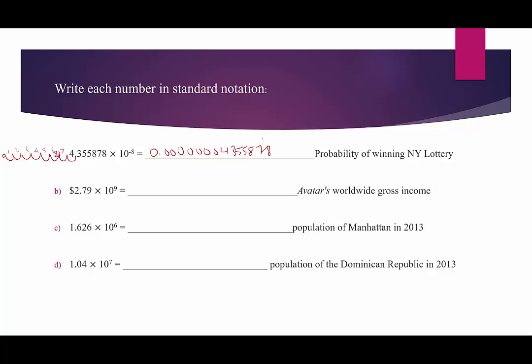How about Avatar's worldwide gross income? We have 2.79 times 10 to the 9th. This is a positive exponent, so that tells us to move the decimal point to the right. So we're going to take 2.79. We're going to move it 9 places to the right. 1, 2, 3, 4, 5, 6, 7, 8, 9.